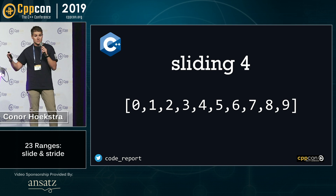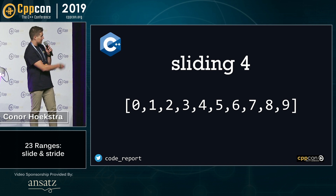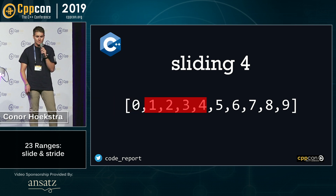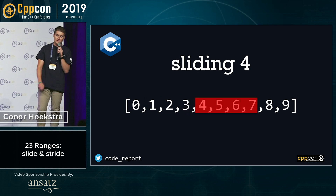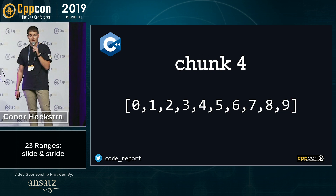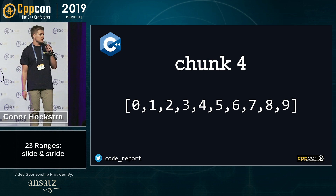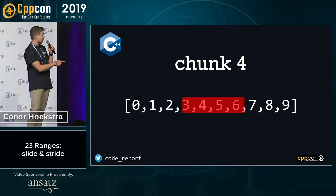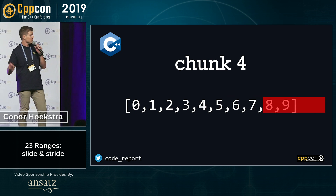If we take a look at what these algorithms do: sliding with k equal to four and our list of integers zero to nine starts by looking at the first four integers, then it takes a step, looks at the next four, takes another step, and it continues until we end up with our final range of ranges. The different ranges are separated by colors. Chunk with k equal to four is a very similar algorithm, but instead of stepping by one, it steps by the size of the chunk — so we look at zero to three, then four to seven, and then we have a partial chunk at the end: eight and nine.